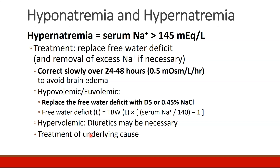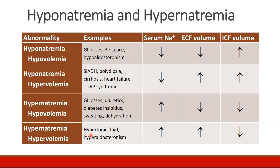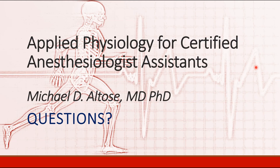Hypervolemic hypernatremia may be treated by diuretics, and once again by identifying and treating the underlying cause. This chart summarizes the four types of hypo and hypernatremia, gives examples for each, and shows the commonly expected findings as far as serum sodium, extracellular fluid volume, and intracellular fluid volume. This is a chart you should be able to reproduce for an exam. That's the end of our discussion about hyper and hyponatremia. We will continue the discussion on circulation in the next recording.